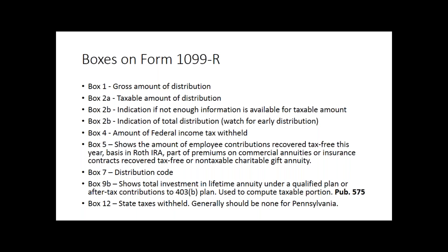The one critical box we want to look at is box 7. We'll spend a little bit of time talking about box 7 and the various distribution codes. We've tried to provide a couple of examples of 1099-Rs so you can actually see what those are going to look like and how we'll be able to work with those in practice.